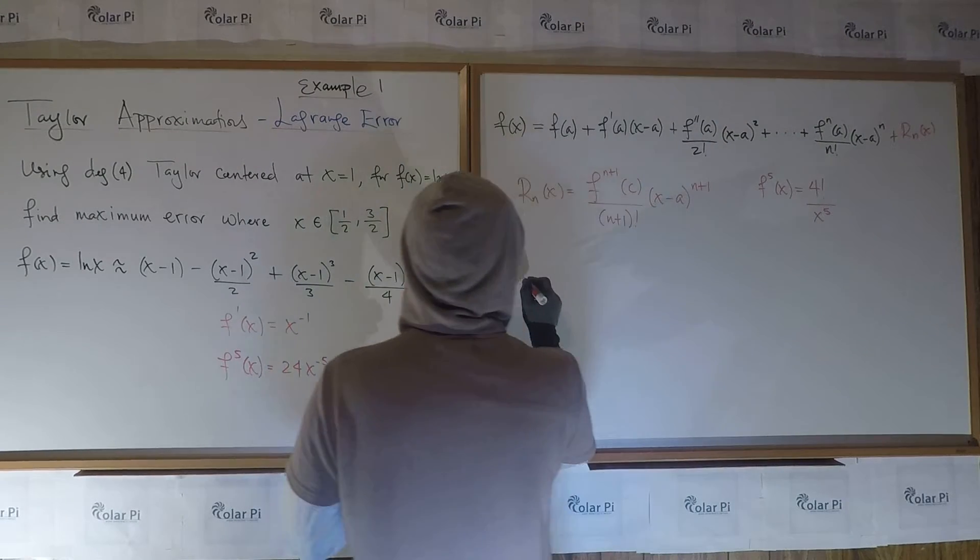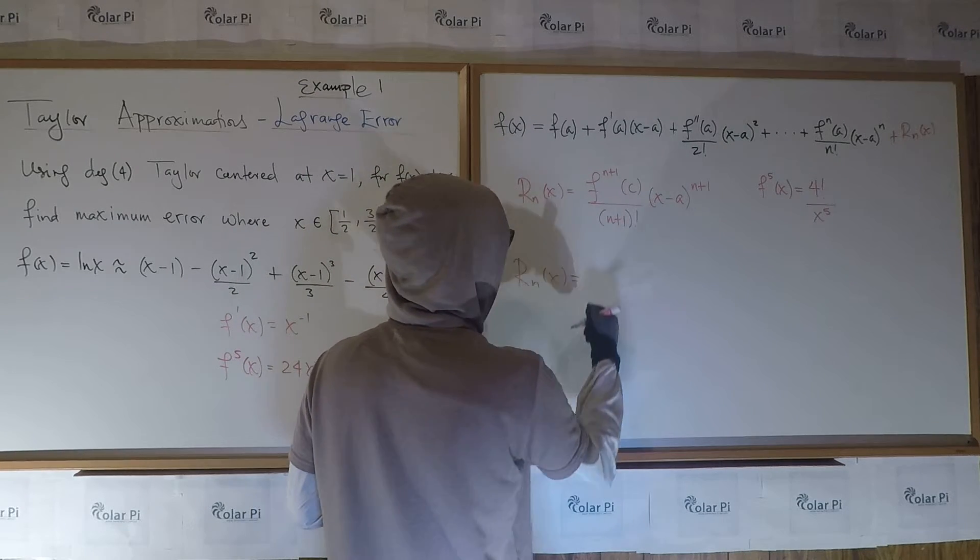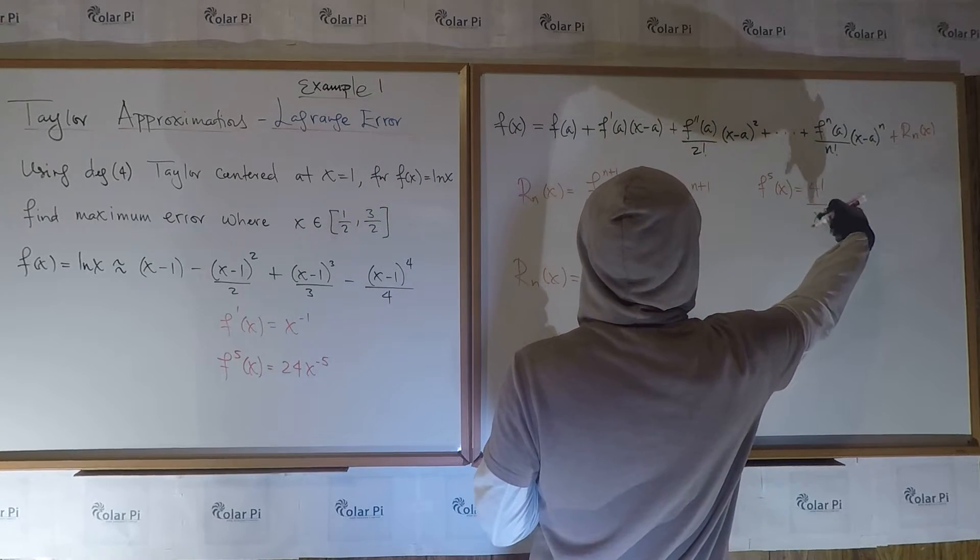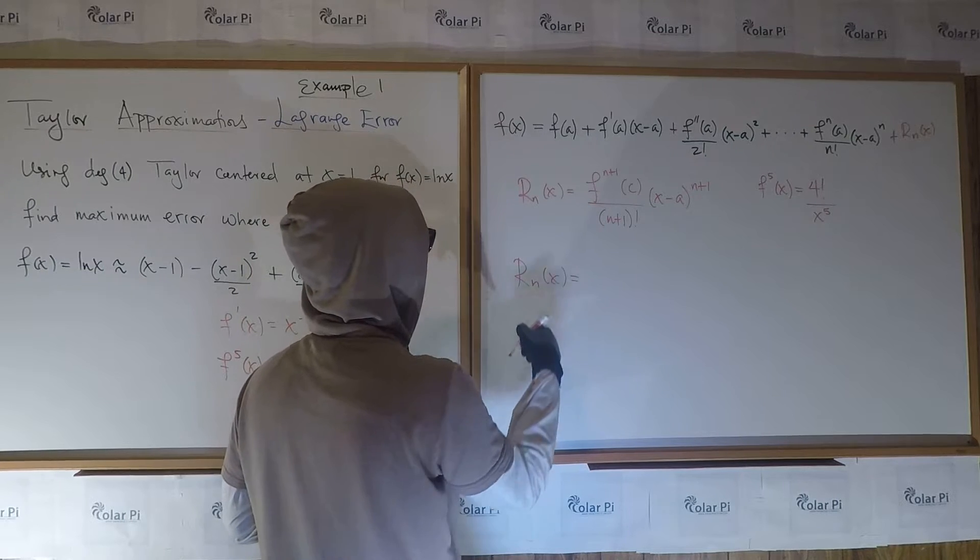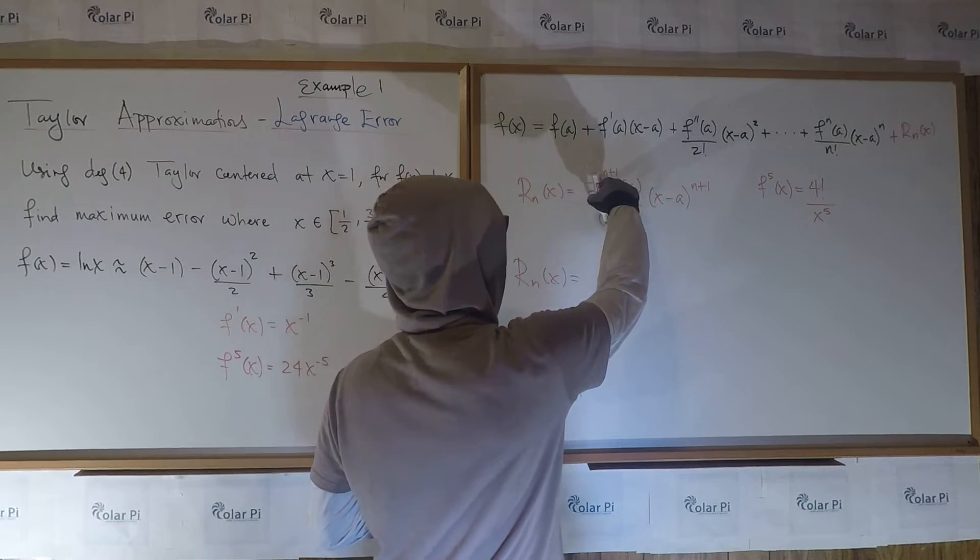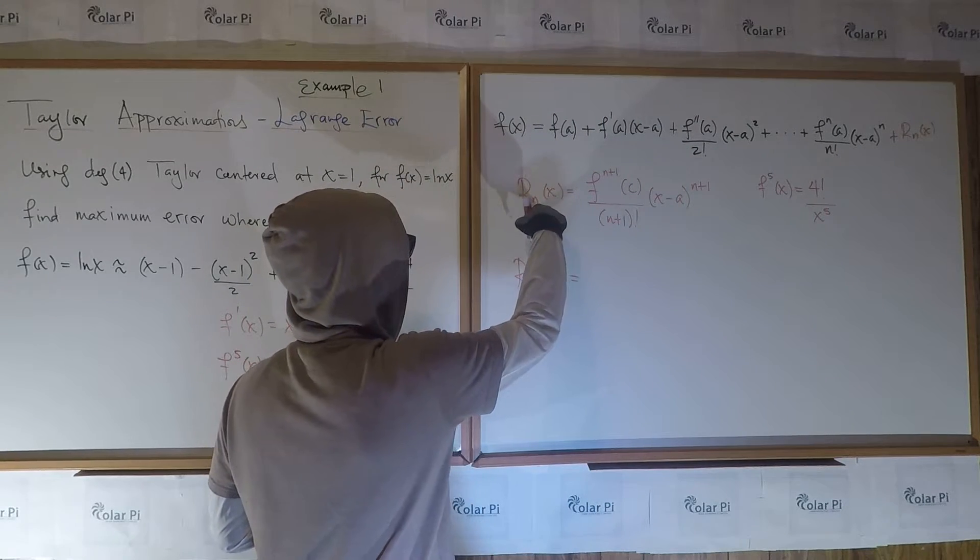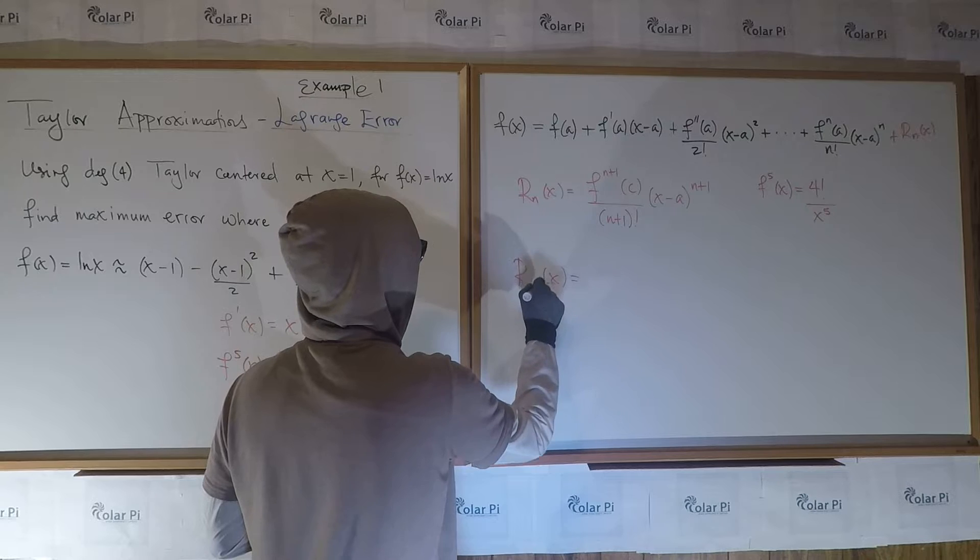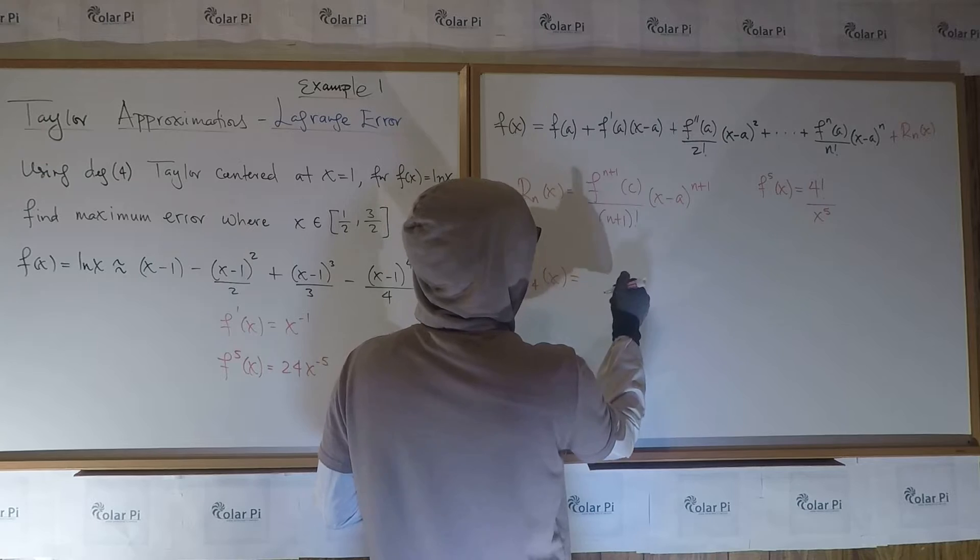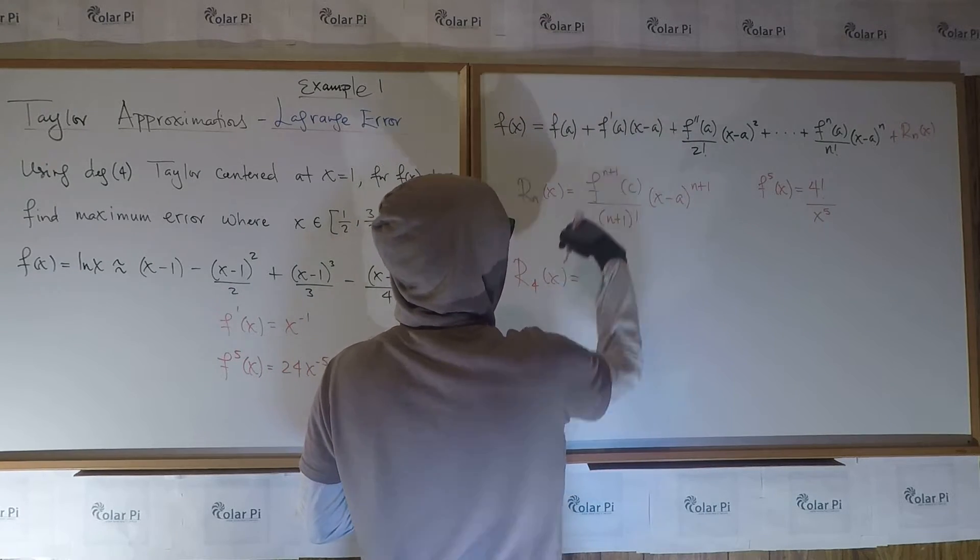So that means then in this case, rn of x is going to equal this here, f n plus one is this here, evaluated at c. Important to pay attention. Even though it says rn, here is n plus one, n plus one, n plus one. So since r four is what we're using here, we're going to get a bunch of fives on the right side, is what I'm saying. So this evaluated at c is going to be that guy. And that's going to be four factorial over c to the fifth.